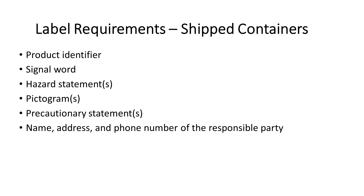Labeling — everything is labeled. Hazardous materials have specific information that must be included: the product identifier or name, the signal word — either 'danger' or 'warning' — the hazard statement describing what it does to you, pictograms which we'll cover in detail, precautionary statements about handling, storage, and safety, and the name, address, and phone number of the responsible party. These label components are the key points you'll need to know, find in your SDS, and train your employees to a level of understanding.